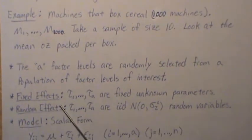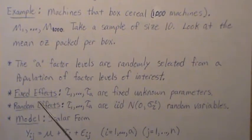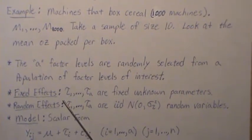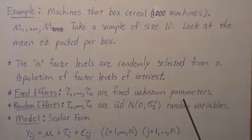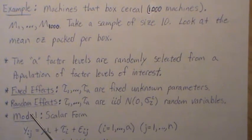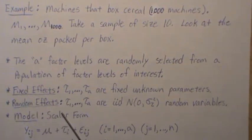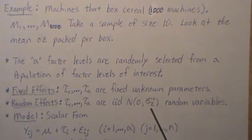In the previous mini series we looked at fixed effects, where tau 1 through tau A are fixed unknown parameters. Here they are random effects — tau 1 through tau A are IID normal random variables with mean zero and variance sigma tau squared.